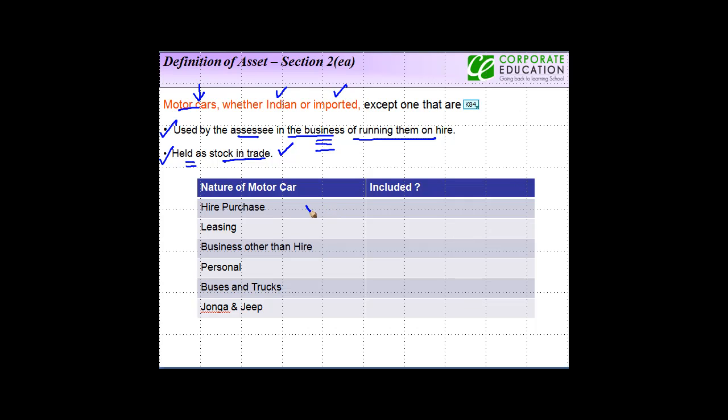In the examples, hire purchase, you include it with the hire purchaser. Leasing? In the hands of the company which leases it. Business other than hire? Yes, it is an asset. If it is used for personal purposes, again, it is an asset. Buses and truck? Not included. Chongain jeep? Not included. Because in both these cases, it is a heavy vehicle and not a motor car for wealth tax purposes.